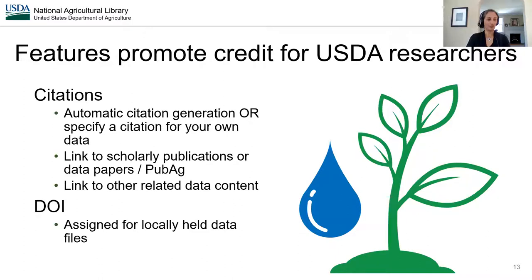We provide features to promote credit for USDA researchers as an incentive to deposit data with us and provide more complete records with linked information. U.S. federal data should be openly and freely available, but the Ag Data Commons makes it easier for researchers to give and receive credit for their work. Citations are automatically generated for all records in the catalog, and researchers can link to their scholarly publications, data papers, and other related content. We also provide DOIs for locally held data files, which has been a big incentive for researchers to share their data publicly.